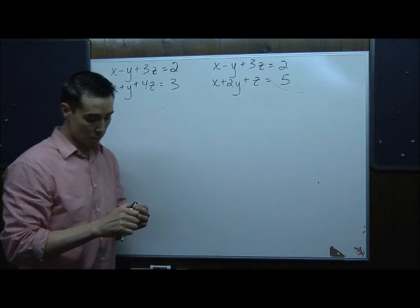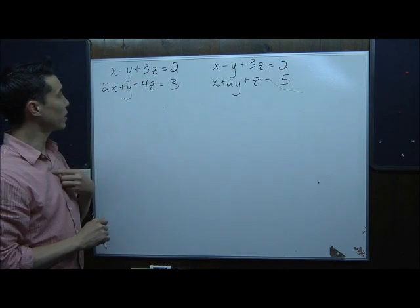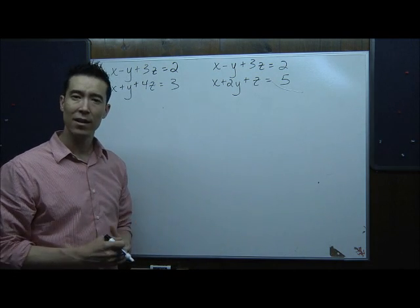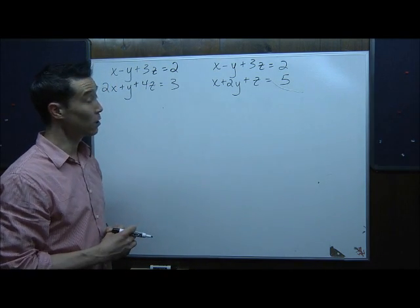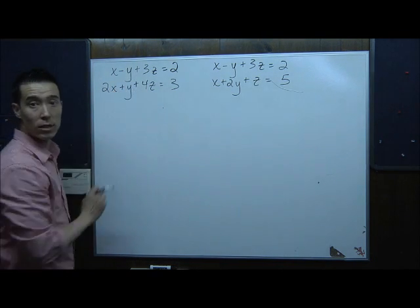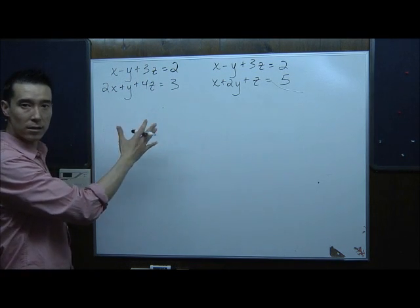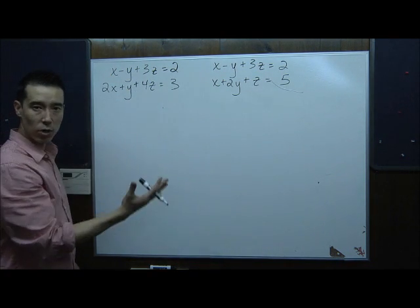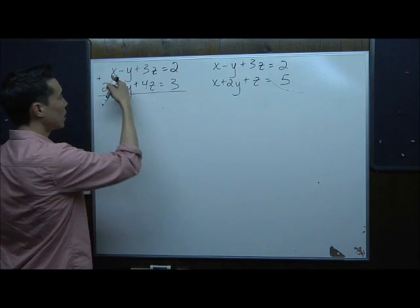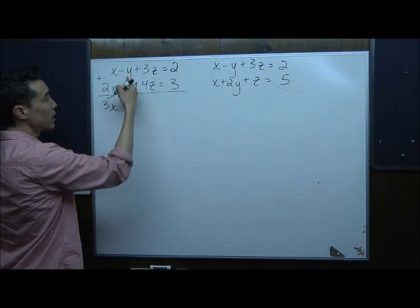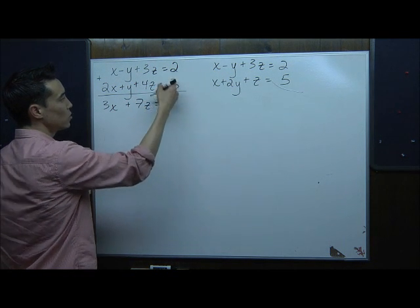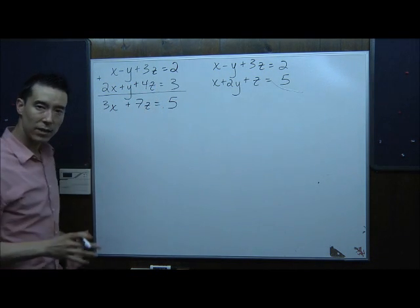On number 2, I took the equation x minus y plus 3z equals 2 and paired it with the other two equations, like we did in the first example. Putting these two together, negative y and positive y will drop out easily. Adding straight down: x and 2x is 3x, negative y plus y drops out, 3z plus 4z is 7z, and 2 plus 3 is 5.